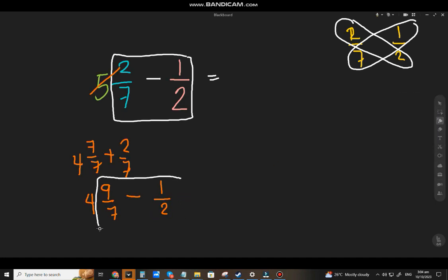So, focus on the fractions lang muna. Proper fraction. So, cross multiply. 9 times 2 is 18. Tapos, 7 times 1. That will be 7. Divide mo ng 7 times 2. That will be 14.